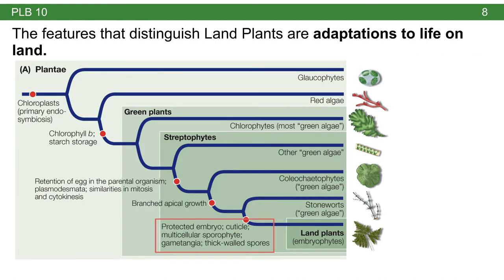When you think about land plants, you want to think about their characteristics. The defining characteristics of land plants are really solutions to the problems they had to face when transitioning to life on land. The features that distinguish land plants are adaptations to life on land — solutions to problems like support, reproduction, and photosynthesis and respiration.